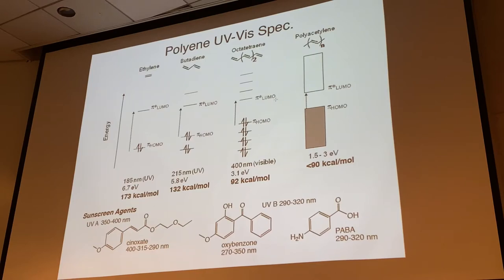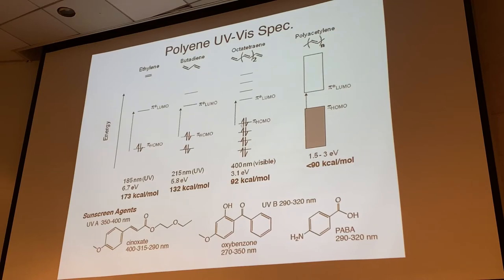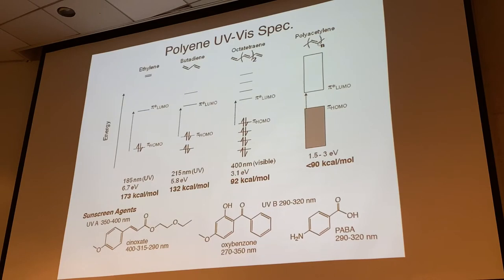Those compounds are actually absorbing in the blue range of the visible spectrum; what you see is the frequency that is not absorbed, giving those reddish and orange colors. With octa-tetraene, the gap is only 92 kcal/mol because we have many more filled and empty orbitals. Octa-tetraene is reddish in color. Going further to polyacetylene, with up to 100 or so conjugated ethylene units, the gap becomes so small it actually has metallic character.